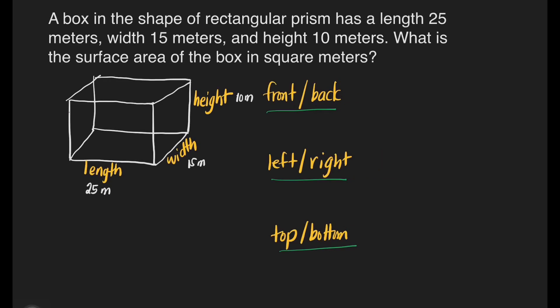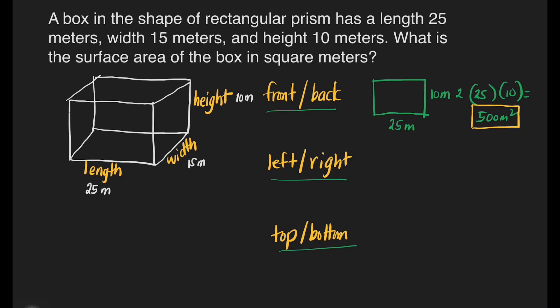Let's start with the front and back faces. It has a length of 25 meters and a height of 10 meters. That's going to be length times height times 2, because we have the front and the back. So, 25 times 10 times 2: 25 times 10 is equal to 250, times 2 is 500 meters squared. This is for the front and back faces.